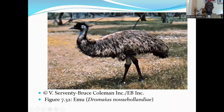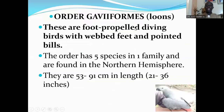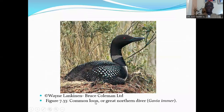The next order is Order Gaviiformes, which consists of the loons. These are foot-propelled diving birds with webbed feet and pointed bills. The order has five species in one family and are found in the northern hemisphere. They are 53 to 91 centimeters in length. Here is the common loon, or great northern diver.